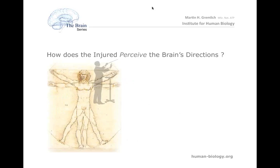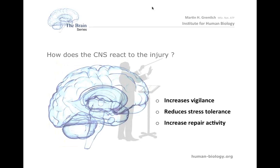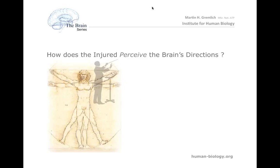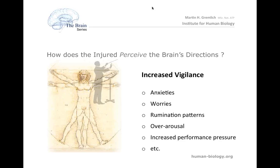How does the injured person perceive the brain's directions of increased vigilance, reduced stress tolerance, and increased repair activity? There are three emotional and motivational patterns that lead to behavior. Increased vigilance is probably perceived as increased anxiety, increased worries, increased rumination patterns, a general overall arousal measurable by EEG, and increased performance pressure. Social patterns become more impacting, and social competence may be reduced because increased vigilance causes overreaction.